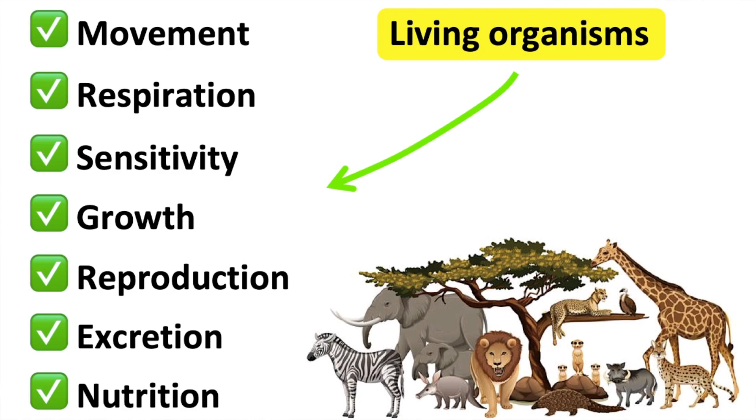Growth. All living things grow. Reproduction. This is the process in which living things make more living things of the same type. Excretion. This is the process by which organisms get rid of waste. Nutrition. Living things take in and use food.